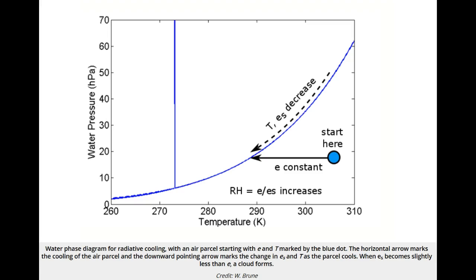In radiative cooling, the water vapor pressure stays the same, but the temperature drops. Because the saturation vapor pressure drops as the temperature decreases - remember saturation vapor pressure depends only on temperature - then the saturation vapor pressure decreases until it gets equal to, and then a little less than the vapor pressure, and then the supersaturation goes above zero.